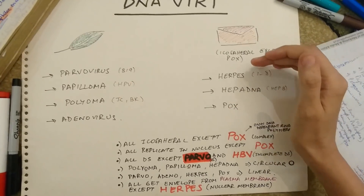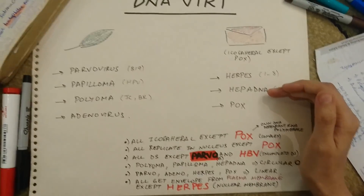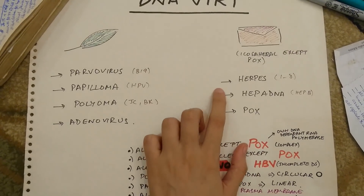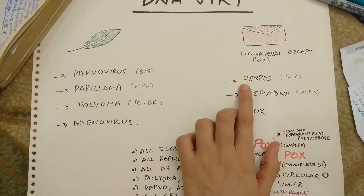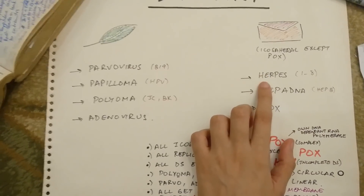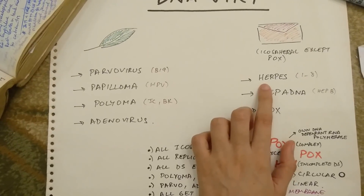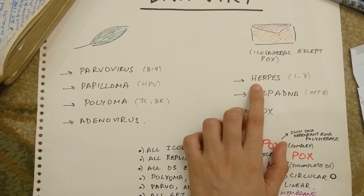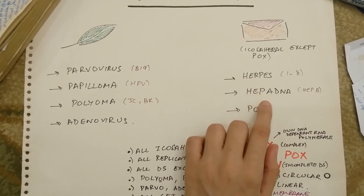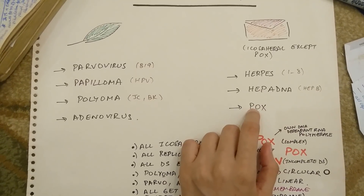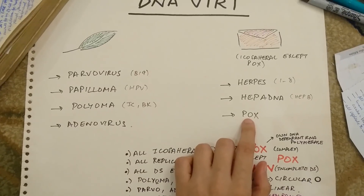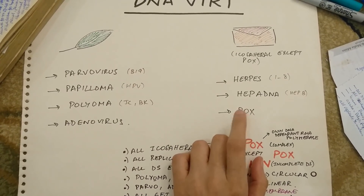Please do remember that herpes and hepadna have an icosahedral envelope whereas pox has a complex envelope. Amongst the herpes viruses we have strains 1 to 8: herpes simplex 1 and 2, varicella zoster virus, Epstein-Barr virus, cytomegalovirus, human herpesvirus 6 and 7, and human herpesvirus 8. Then we have the hepadna virus which is relevant because of hepatitis B. The pox virus used to be responsible for smallpox which got eradicated, and it's also responsible for cowpox and molluscum contagiosum.